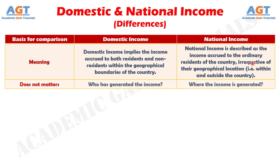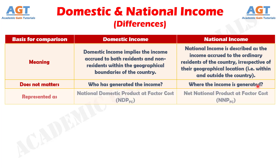Number two: in the calculation of domestic income, it does not matter who generated the income — that is, it includes all the producers working within the domestic territory of the country. Whereas, in the calculation of national income, it does not matter where the income is generated — that is, it takes into account all the producers who are normal residents of the country.